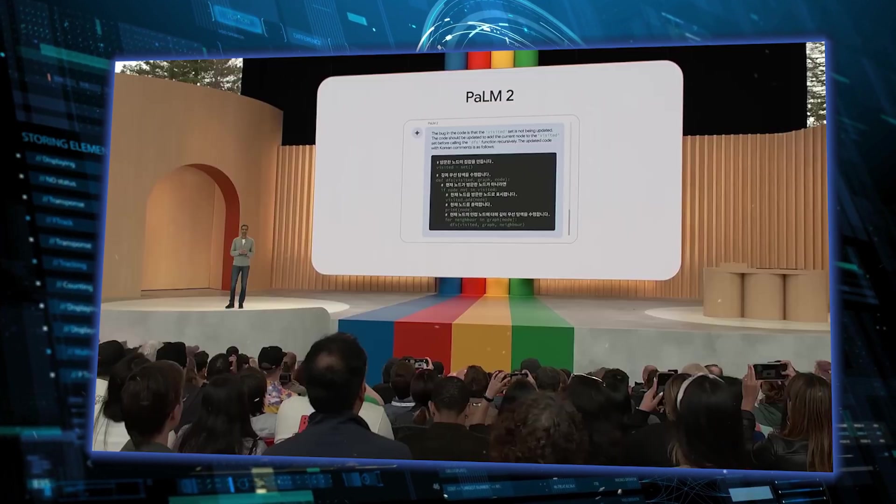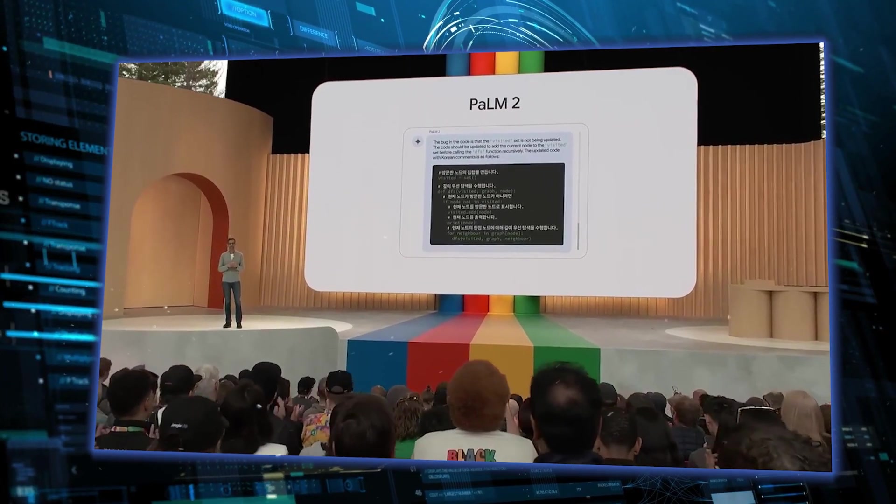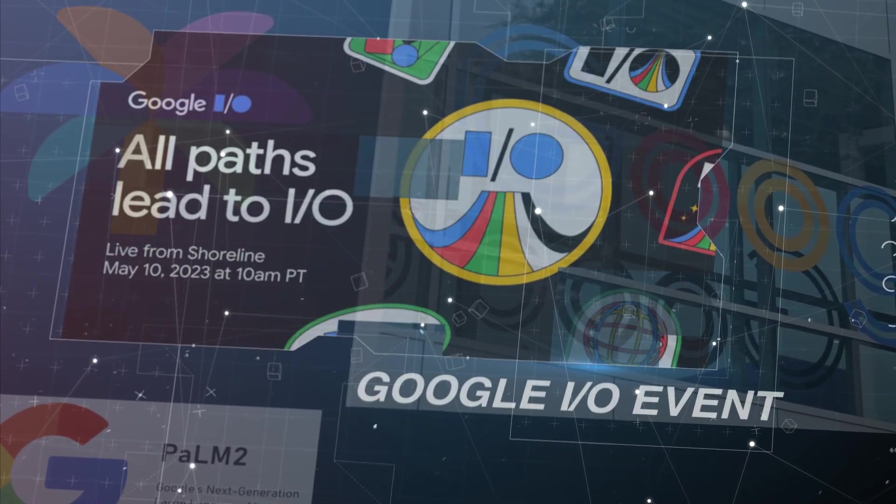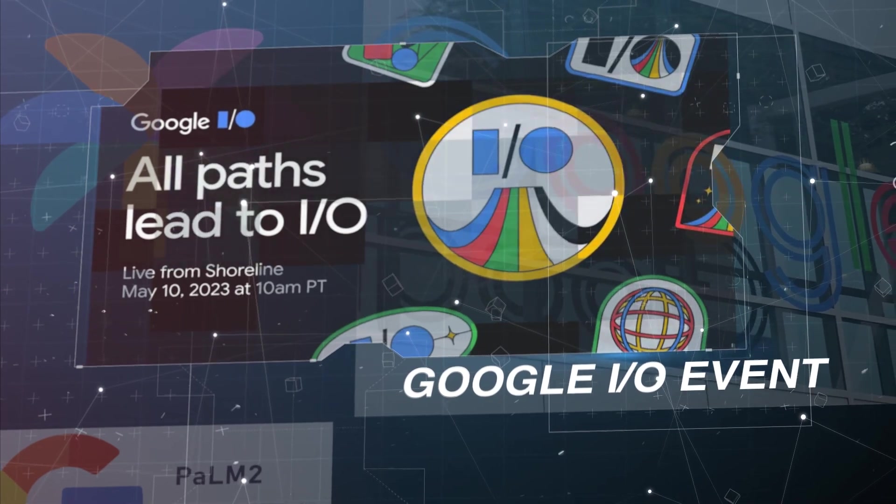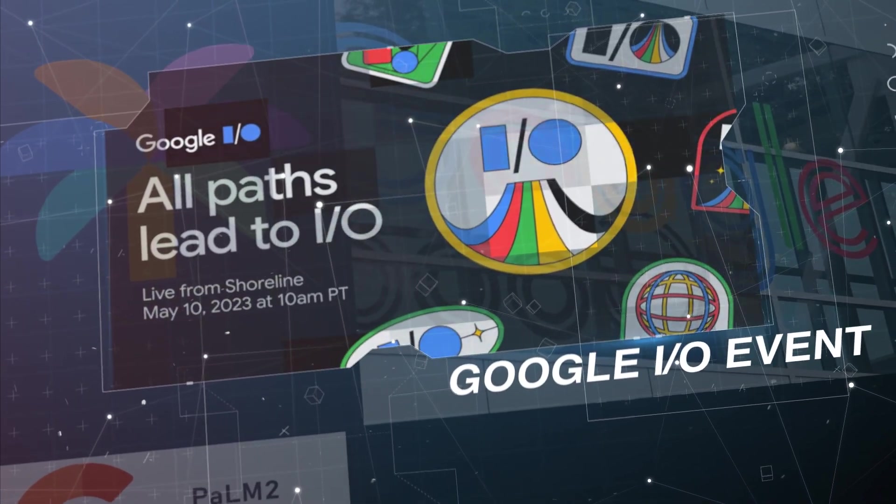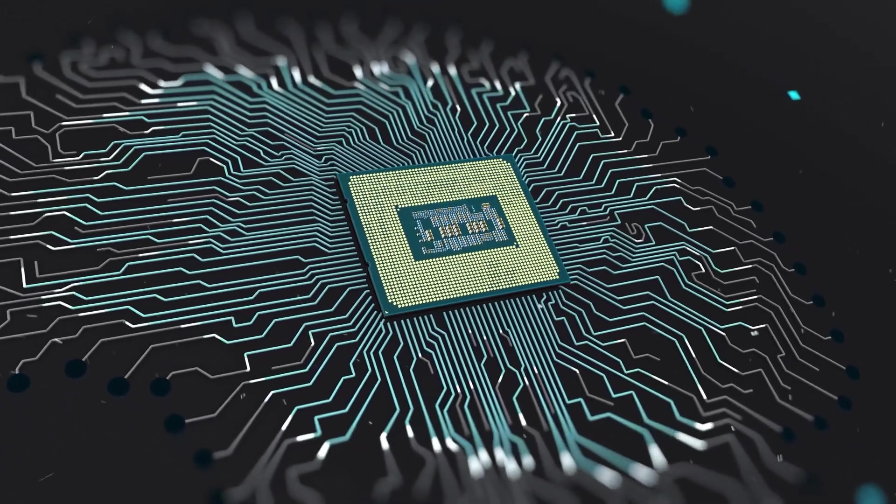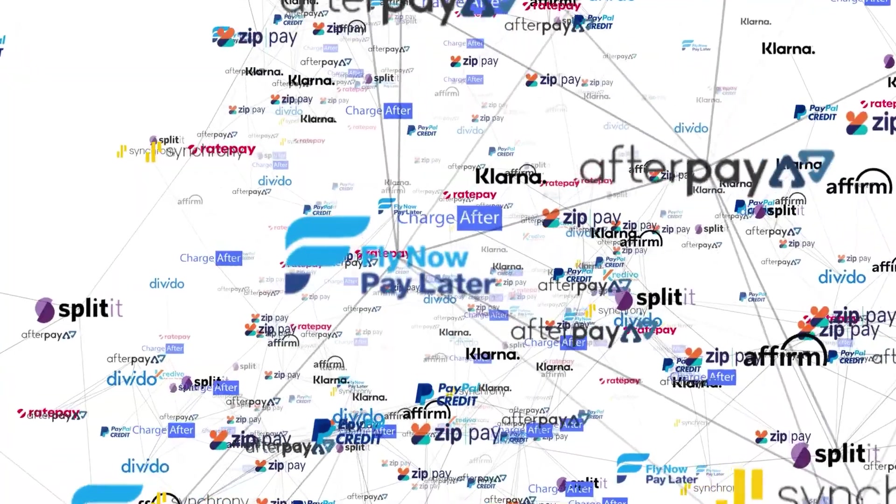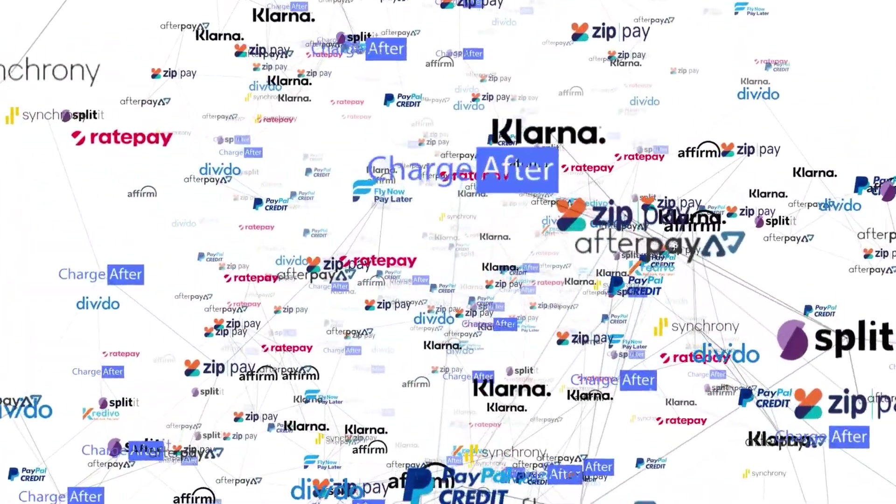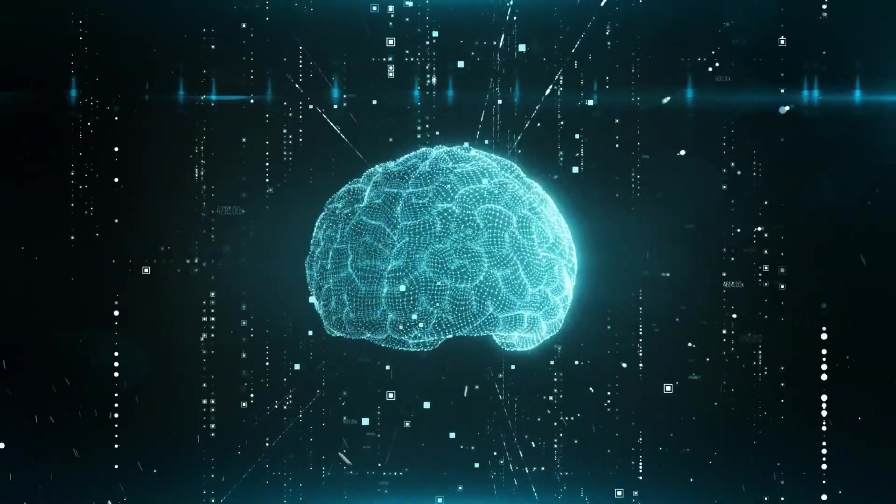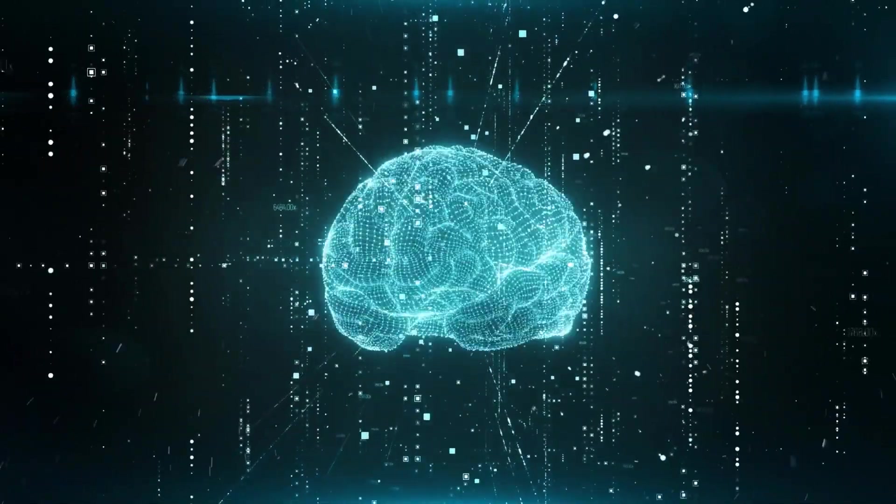PaLM 2 is the force behind the optimization of more than 25 Google products and features. During the recent I/O event, Google unveiled an array of exciting additions, all made possible by the remarkable capabilities of PaLM 2. This signifies that PaLM 2 is injecting cutting-edge AI advancements directly into its products, benefiting a wide range of individuals and organizations worldwide.